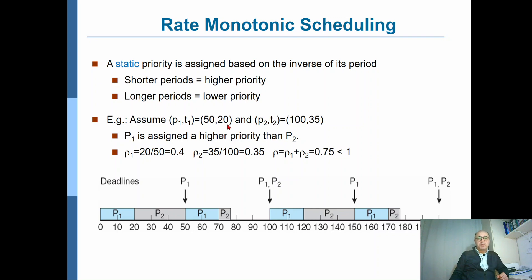So since P1 has shorter period, we will give that higher priority. And if you look at the utilization of the CPU due to process 1, we would be giving 20 time units of CPU time in every 50 time units to process P1.